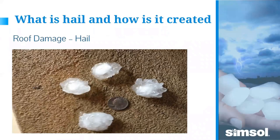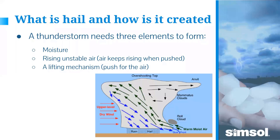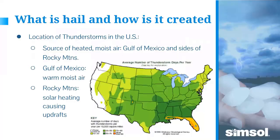Let's talk about hail and how it's formed. In this photograph you can see that hail is not smooth like a golf ball — it has jagged edges, irregularities, and different densities, as shown by the darker shades of white. That all plays into how it affects the roof when it falls. To have hail, you need a thunderstorm with moisture, rising unstable air, and a lifting mechanism.